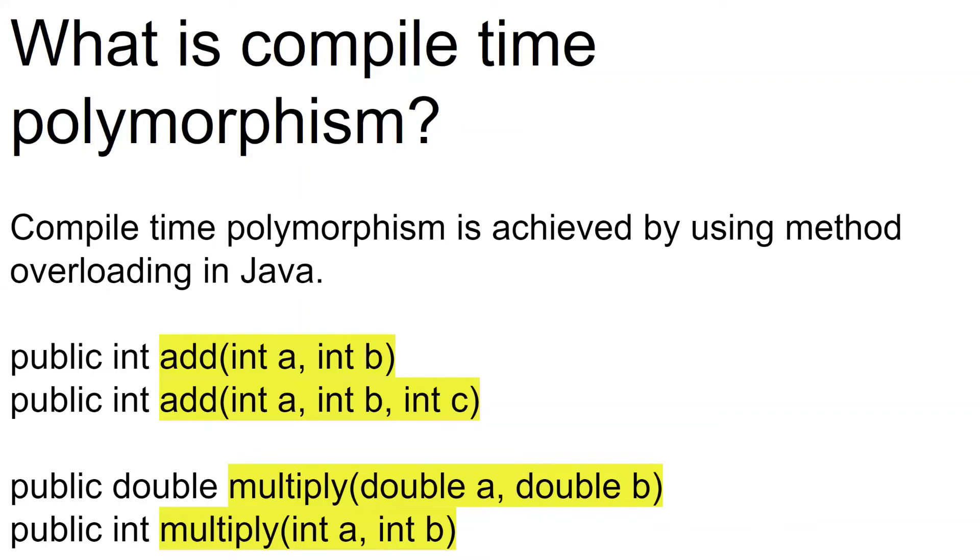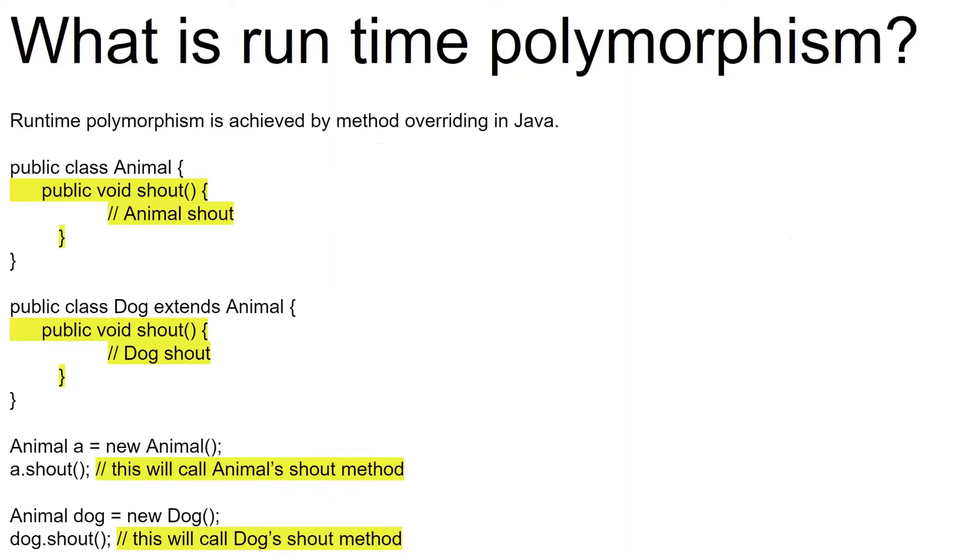So what is meant by runtime polymorphism? Runtime polymorphism is achieved using method overriding in Java. Let's have a look at the example. We have a class known as animal, and there's a method called shout, public void shout. So this shout method belongs to class animal. Now just below that we can have a look at the dog class, which extends animal. And it also has the method shout with exact signature that is present in your animal class. So this means we are overriding the shout method in the dog class.